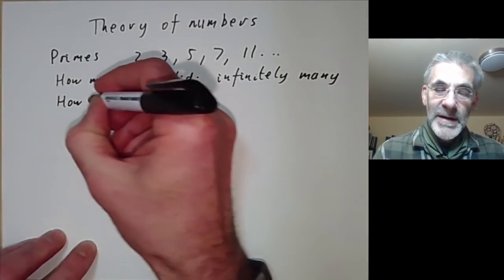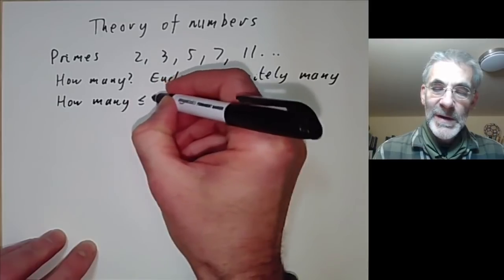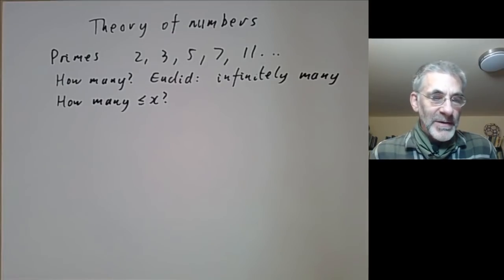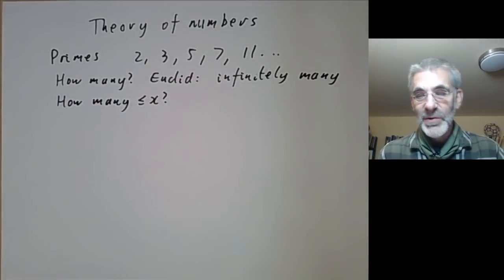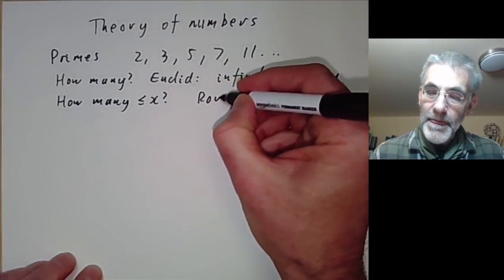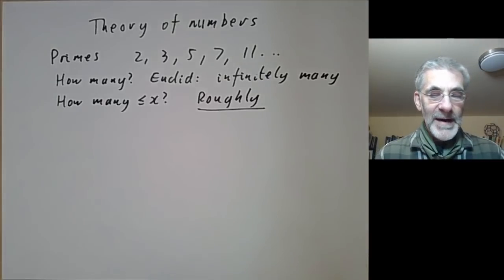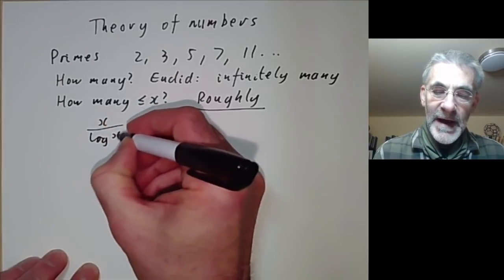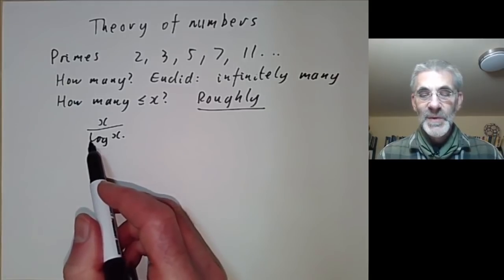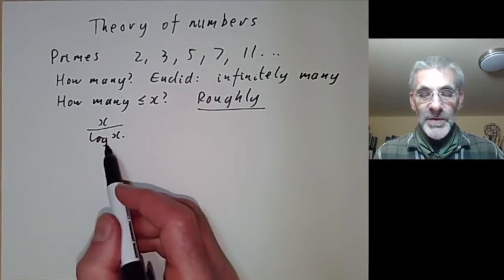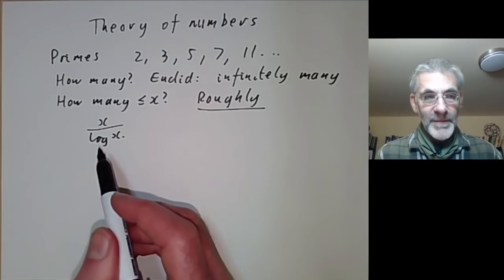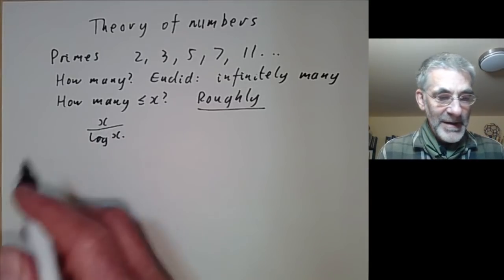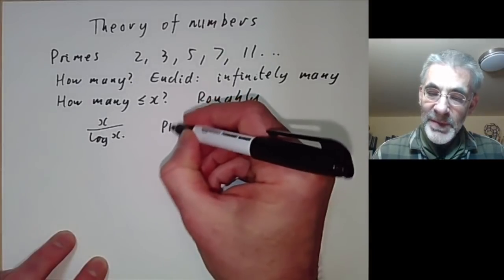We can ask a more precise question: how many primes are there less than or equal to x for some real number x? It's difficult to give an exact answer since the primes look a bit random, but roughly there are x over log x primes less than x. I'm using the mathematician's notation where logarithm means natural logarithm to base e. This is called the prime number theorem.